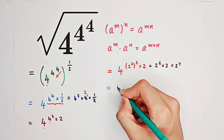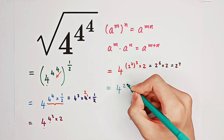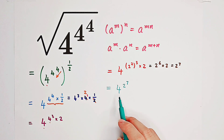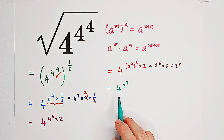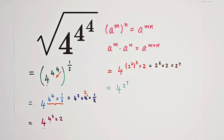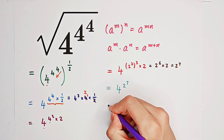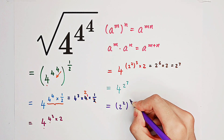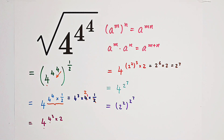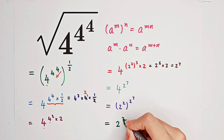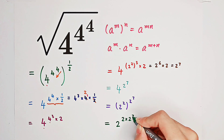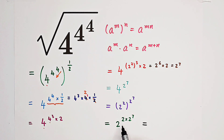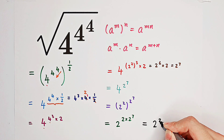So this one is just 4 to the power of 2 to the power of 7. Of course, we also have this 4 on the base, which can be simplified as 2 squared. So it is 2 squared, all to the power of 2 to the power of 7. Don't worry — according to our first formula, it is 2 to the power of 2 times 2 to the power of 7. And 2 times 2 to the power of 7 is 2 to the power of 8.